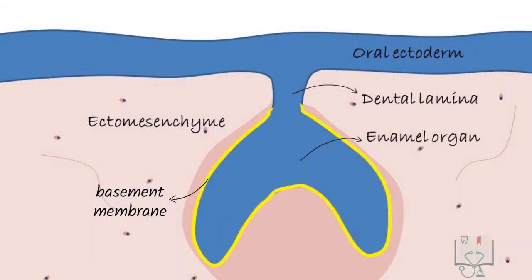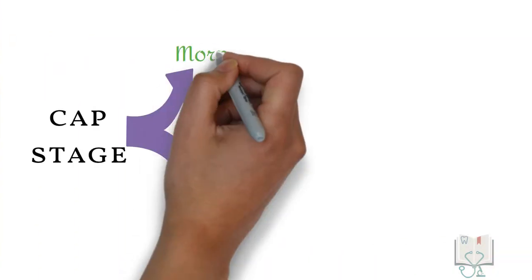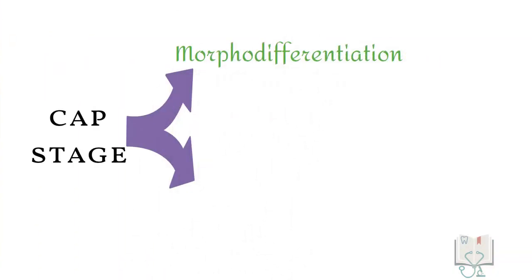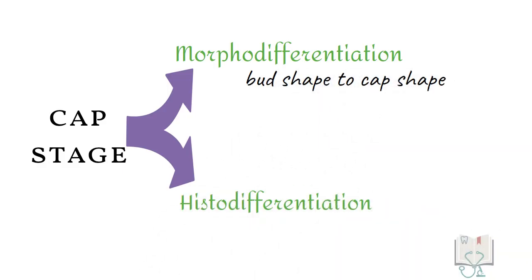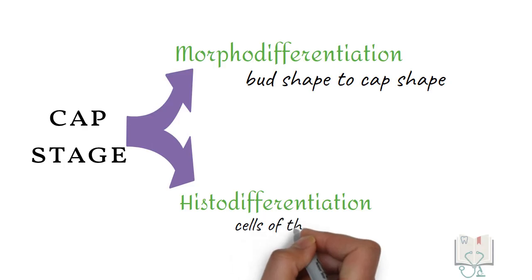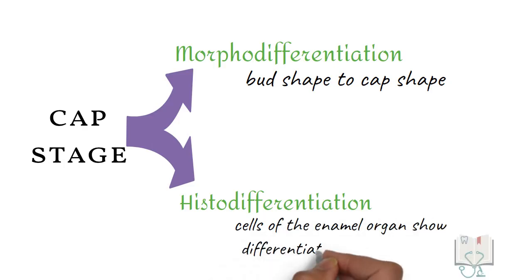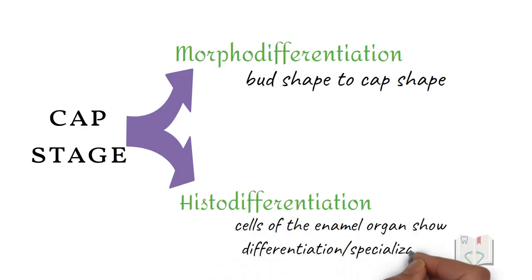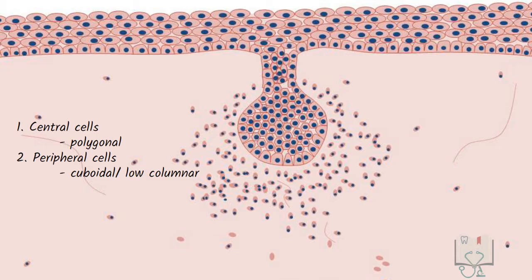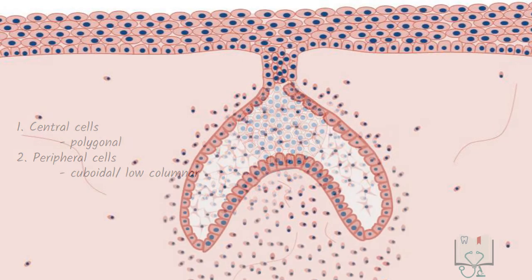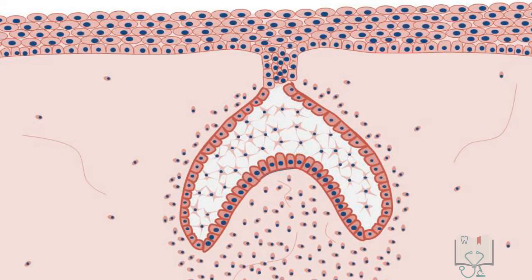A basement membrane surrounds the enamel organ. The cap stage shows morphodifferentiation by changing its shape from a bud to a cap, and there is also histodifferentiation from this stage — that is, the cells of the enamel organ start showing differentiation or specialization. From the two types of cells in the bud stage, three types of cells are seen in the cap stage.